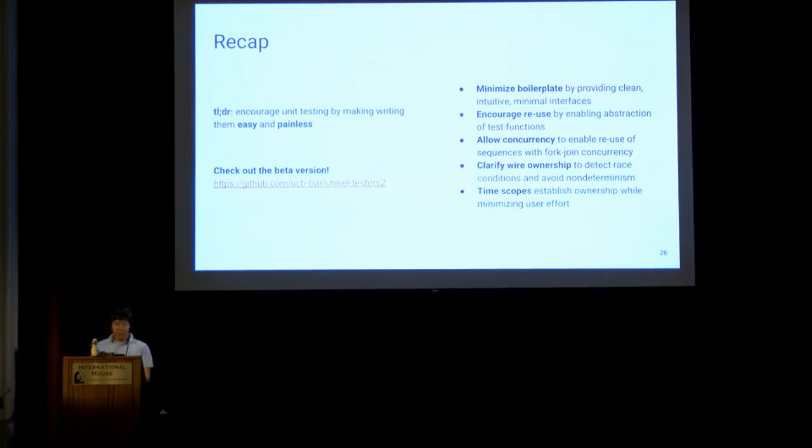So the takeaway here is we want to encourage unit testing by making writing tests easy and painless, and Testers 2 aims to do this by minimizing boilerplate with intuitive, minimal interfaces, allowing reuse of test code by enabling abstractions. Concurrency extends this reuse to sequences, and duration scopes establish ownership while minimizing user cognitive overhead, and allows the system to detect a class of programming mistakes.